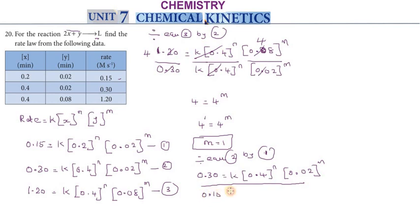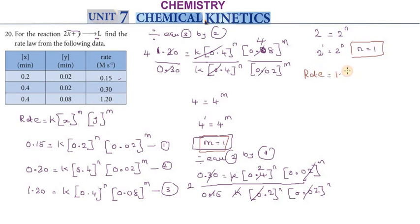The 0.02 to the power m values cancel, k cancels. Simplifying, 2 equals 0.4 divided by 0.2 to the power n. So 2 equals 2 to the power n, which means n equals 1.